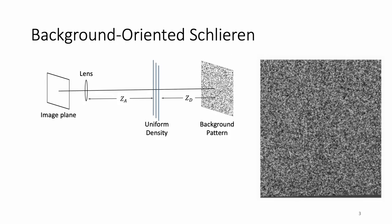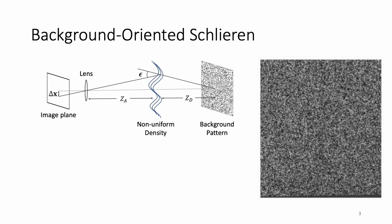The principle of background-oriented Schlieren, or BOS, is as follows. First, a fixed background pattern is prepared. If the density of the media between the background pattern and lens changes, then small fluctuations of the pattern are produced on the image plane.